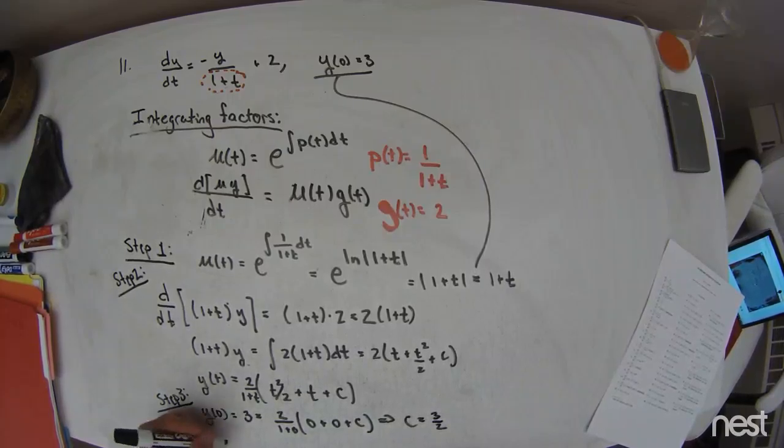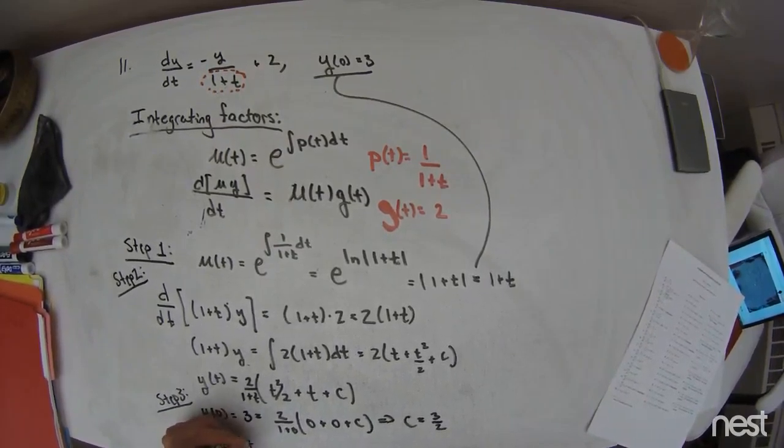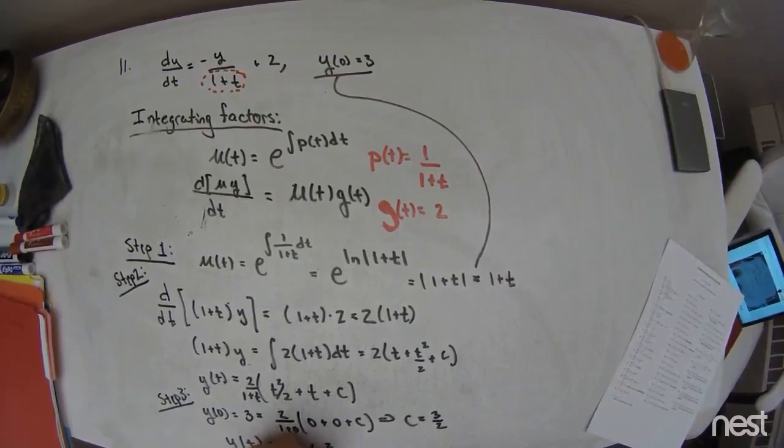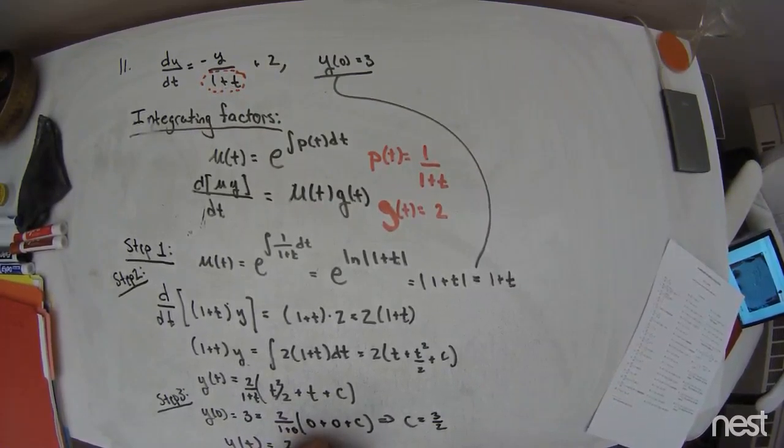And so y of t is equal to 2 over 1 plus t times t squared over 2 plus t plus 3 halves. That is the solution to the initial value problem.